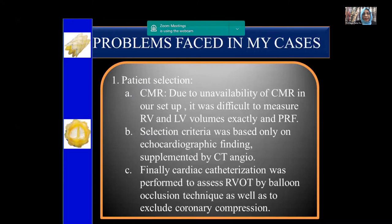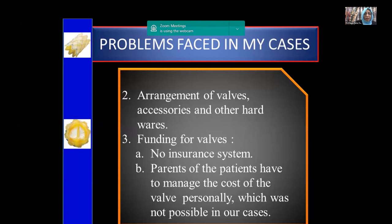What are the problems? Our country is a developing country and most patients are of poor socioeconomic status. We don't even have CMR yet, so it is very difficult to know about RV volume, quantitative assessment of RV volume, and PR fraction. Selection criteria in my patients was based only on CT angiogram, echocardiography, and RV angiography. Another problem is arrangement of valves, accessories, and other hardware. The valve alone is not enough — we need covered stents, bare metal stents, and sometimes special catheters and supporting wires like Lunderquist wires, which are not always available in our country.